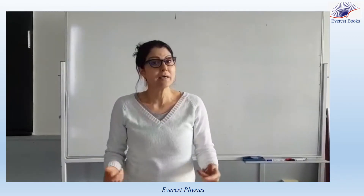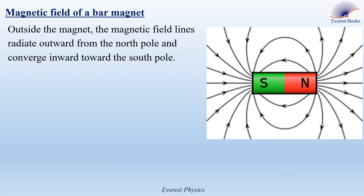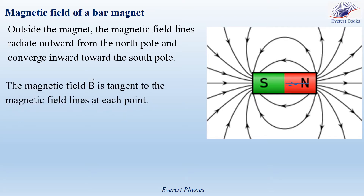But the question is, how can we explain this phenomenon? Before explaining the electromagnetic induction phenomenon, let me remind you of the magnetic field of a bar magnet. This figure shows the magnetic field lines outside a bar magnet. Outside the magnet, the magnetic field lines radiate outward from the north pole and converge inward toward the south pole. Remember that the magnetic field lines always form closed loops, so as they enter the magnet, they run from the south pole to the north pole. The magnetic field B is tangent to the magnetic field lines at each point.